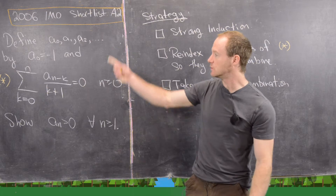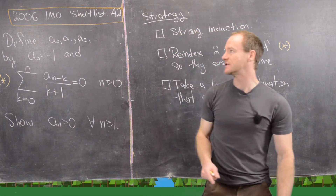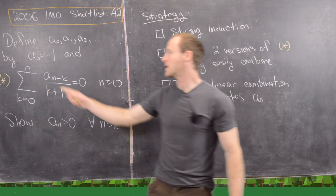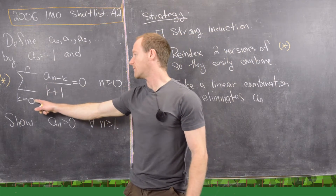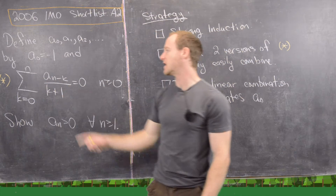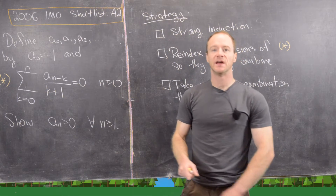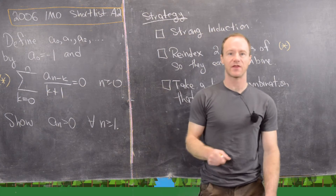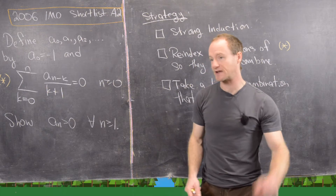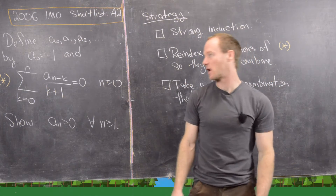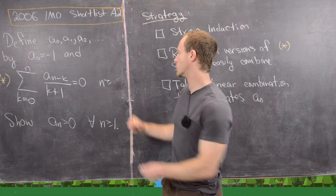This problem has to do with the following sequence. We want to define a sequence of numbers a₀, a₁, a₂, and so on, by a₀ equals negative 1, and then the sum from k equals 0 to n of a_{n minus k} over k plus 1 equals 0. You could clearly solve this for the nth term in terms of a₀ through a_{n minus 1}, but as we'll see in our solution that's not super helpful. This works for all n greater than or equal to 1.